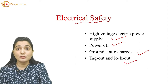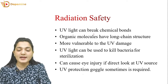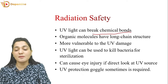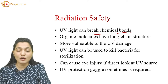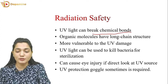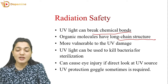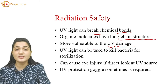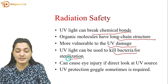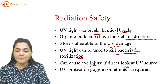For radiation safety, we are using UV lights. UV light can break chemical bonds. Radiation falling on organic molecules — which have long-chain structures in our body — can deteriorate those chains, making them more vulnerable to UV damage. This is why UV light is used to kill bacteria for sterilization, but if UV light leaks it will also affect humans. It can cause eye injury if you look at a UV source directly, so you should always use UV protection goggles.